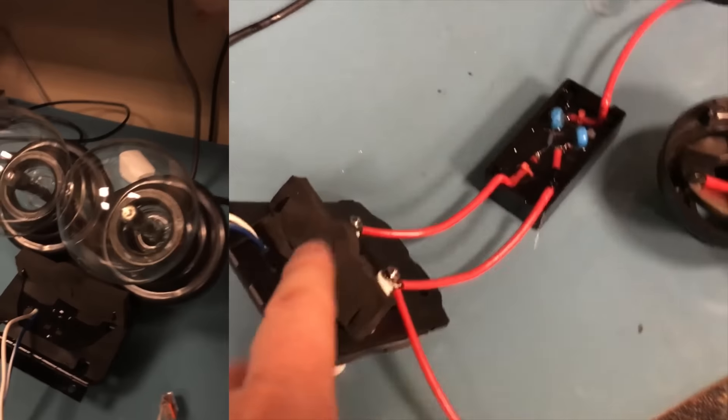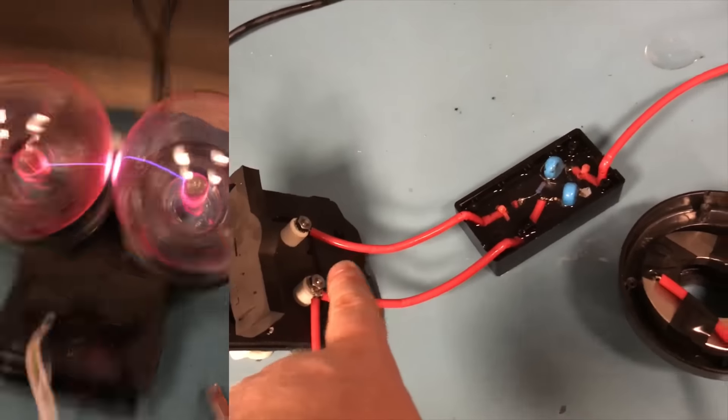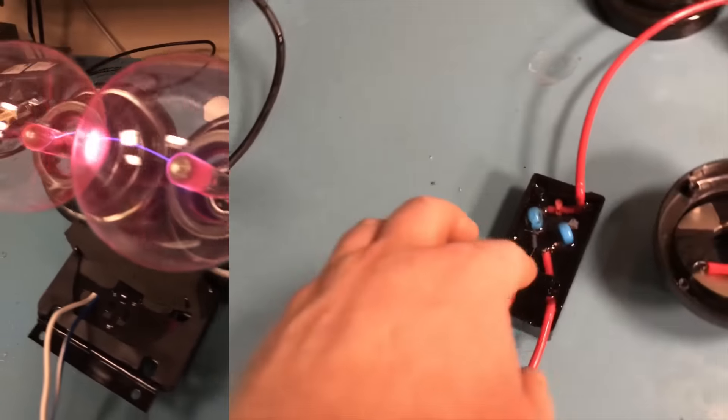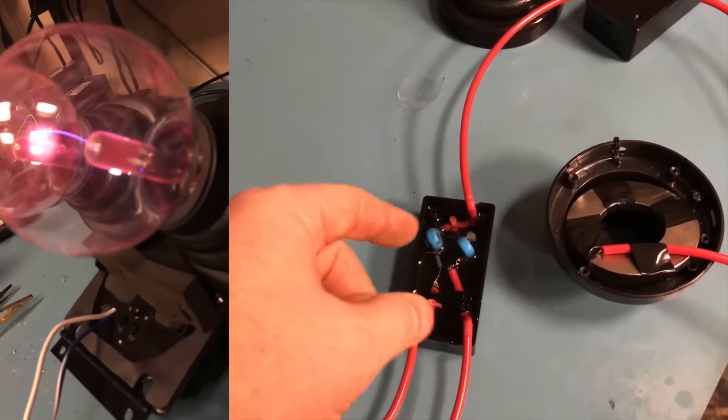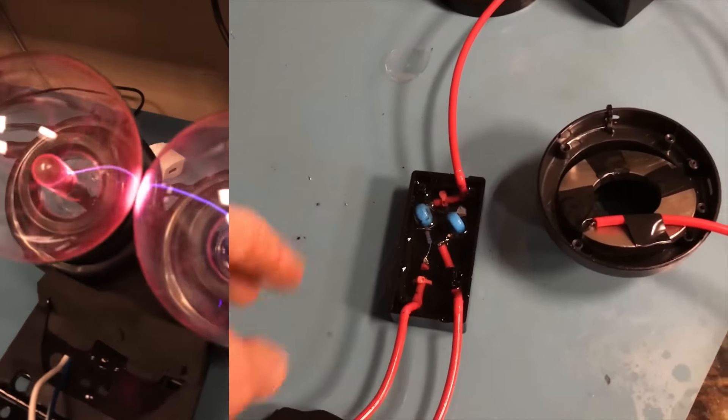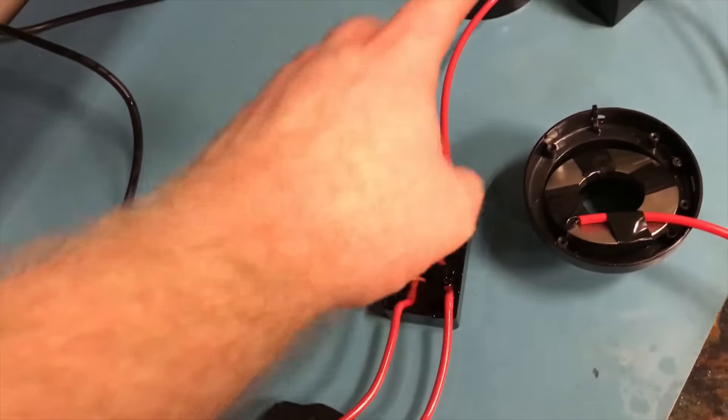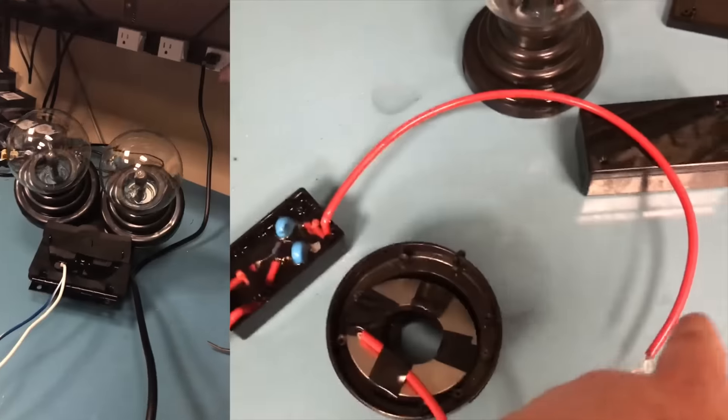So what I did was I took an oil burner ignition transformer that puts out 10,000 volts AC, and I rectified it with a Cockcroft-Walton multiplier. So it turned this 10,000 volts AC into 28,000 DC.